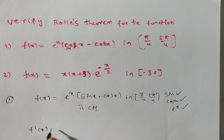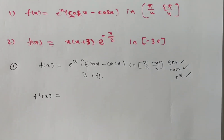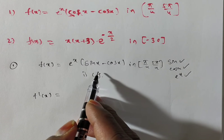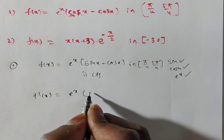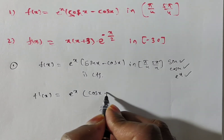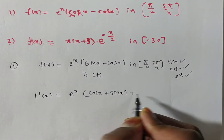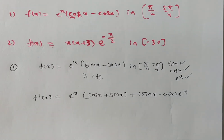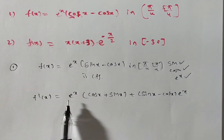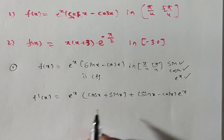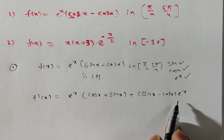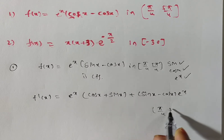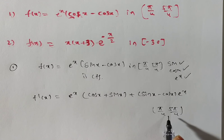Next, f'(x). We have a product of two functions, so we apply the UV rule: (uv)' = u'v + v'u. First term into second term derivative: the derivative of (sin x − cos x) is (cos x + sin x). Plus second term into first term derivative, which gives eˣ. So f'(x) exists in the open interval (π/4, 5π/4).